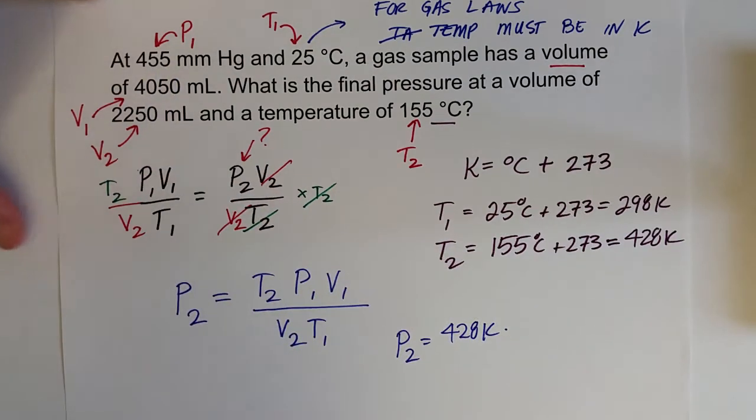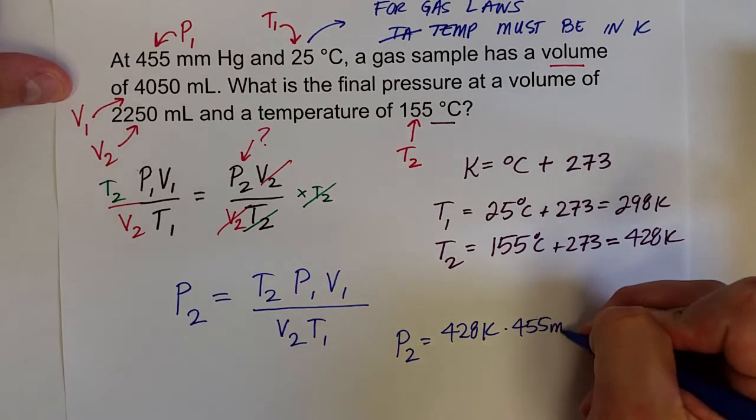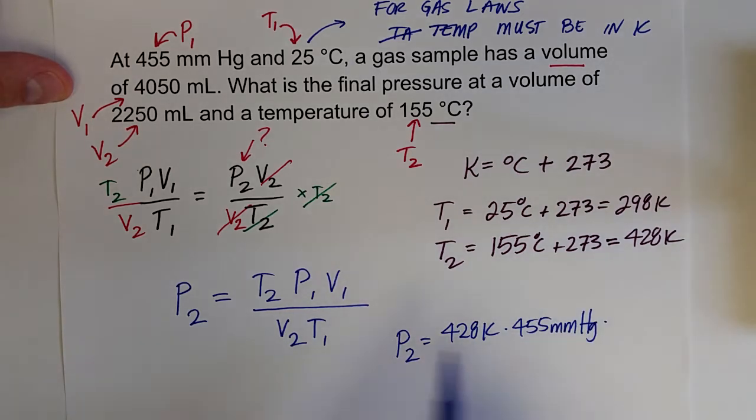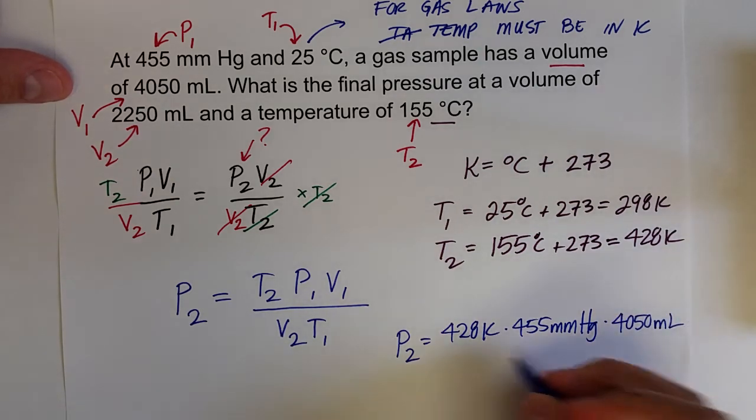which was 455 millimeters of mercury, times V1, which was 4,050 milliliters,